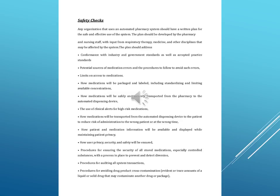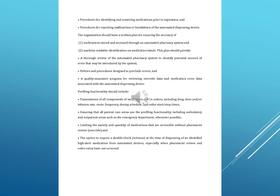Drug cross-contamination refers to evident or trace amounts of a liquid or solid drug that may contaminate another drug or package. Additional plan elements include: procedures for identifying and removing medications prior to expiration; procedures for reporting malfunction or breakdown of the automated dispensing device. The organization should have a written plan for ensuring the accuracy of medications stored and accessed through an automated pharmacy system and machine-readable identification on medication labels. This plan should provide a thorough review of the system to identify potential sources of error, policies and procedures designed to preclude errors, and a quality assurance program for reviewing override data and medication error data associated with the automated dispensing device.